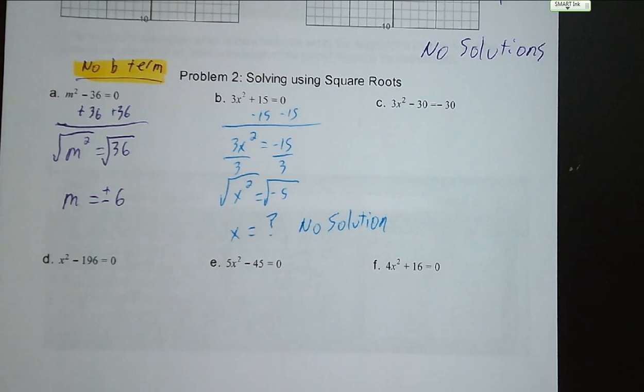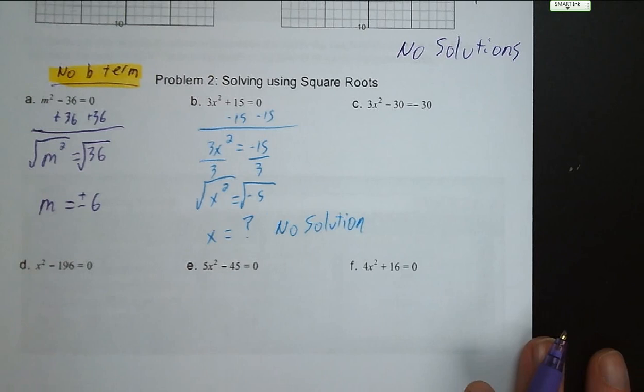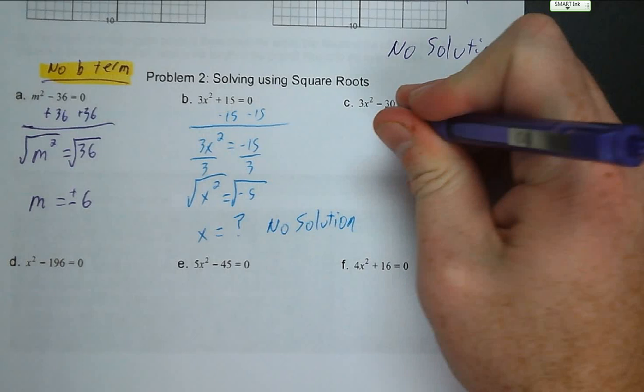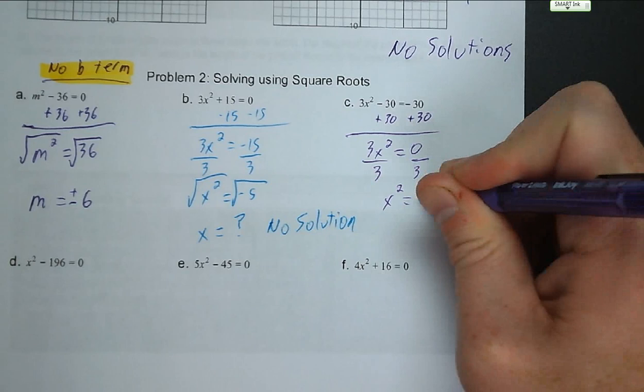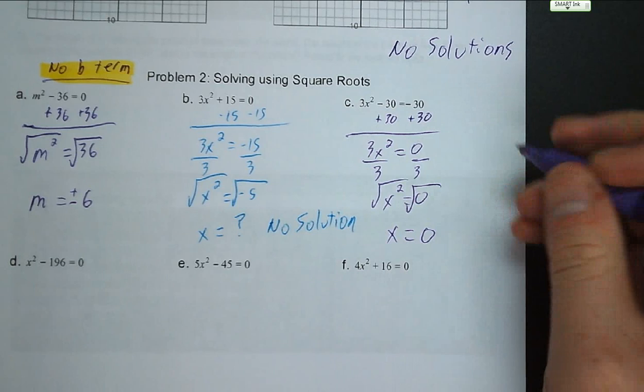For letter C, we add 30 to both sides: 3x squared equals zero. Divide by 3: x squared equals zero. Square root of both sides: x equals zero. So this one has two solutions, letter B is no solution, and letter C is one solution.